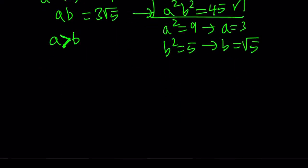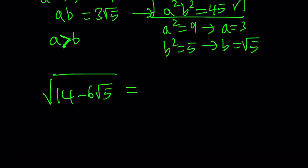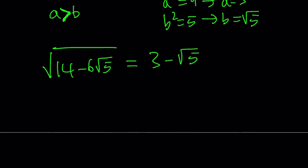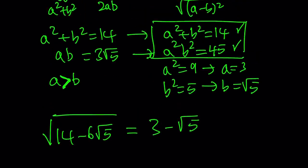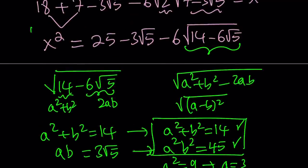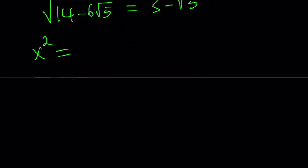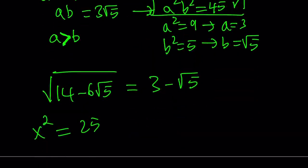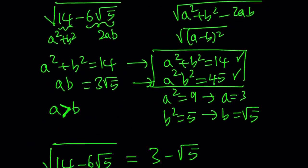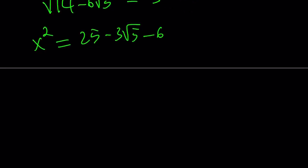Now let's put this together. We have the square root of 14 minus 6 root 5, and this equals a minus b. So a is 3 and b is root 5. If you go ahead and square 3 minus root 5, you should get 14 minus 6 root 5, which is another way to check our answer. So let's plug it in — x squared equals 25 minus 3 root 5, and then minus 6 times this expression, which is just 3 minus root 5.